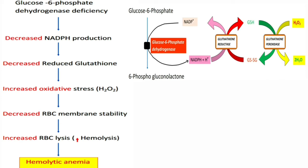NADPH is normally required for the conversion of oxidized glutathione (GSSG) to reduced glutathione (GSH). Due to deficiency of NADPH, this conversion is impaired, leading to decreased production of reduced glutathione.